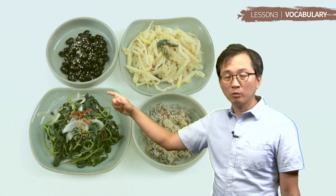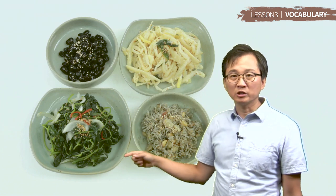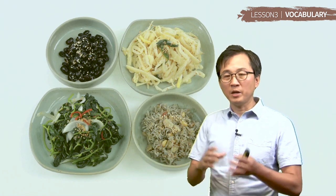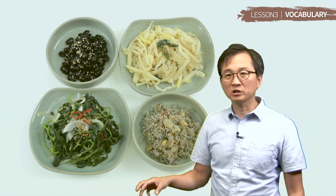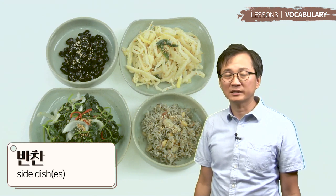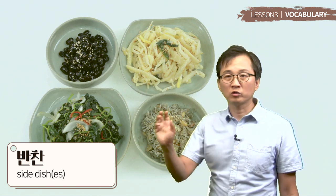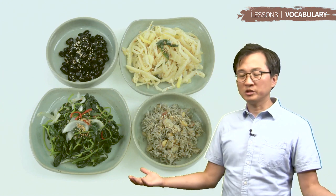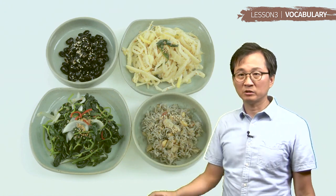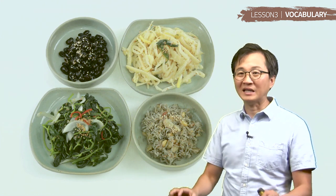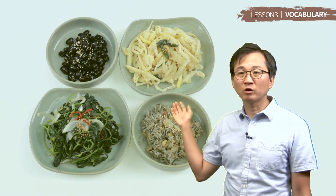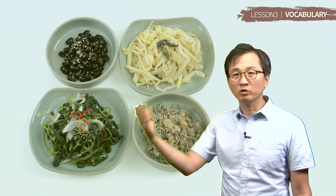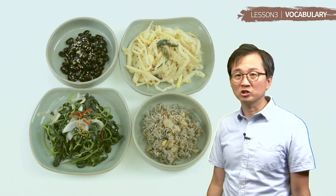여기 보면 이렇게 small side dishes 이렇게 있죠. 그래서 한국 사람은 when they have a meal, there is a main dish 그 다음에 there are small dishes. 그러면 그거를 반찬 이렇게 이야기를 해요. Side dishes. If you go to a Korean restaurant, you order a certain food, and you'll be surprised — they serve you many different types of small dishes. 그러면 다 이게 반찬이에요. You can ask for a refill if you like a few of them. You can ask them for more side dishes.